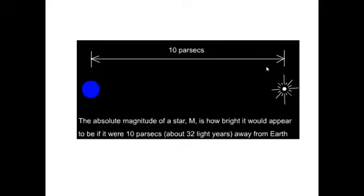And that distance was chosen to be 10 parsecs. Now, I'm not going to talk about parallax here. All you need to remember for the moment is that a parsec is about 3.2 light-years, and so 10 parsecs is about 32 light-years. So the absolute magnitude of a star is how bright it would appear to be if it were about 32 light-years away from the Earth.